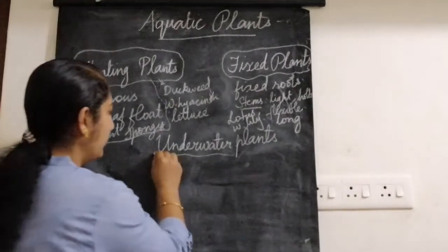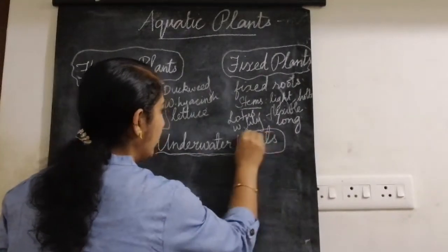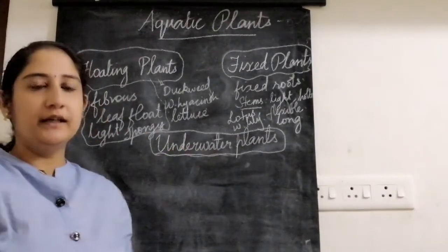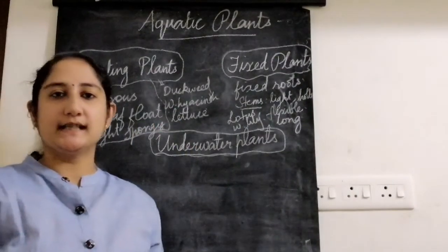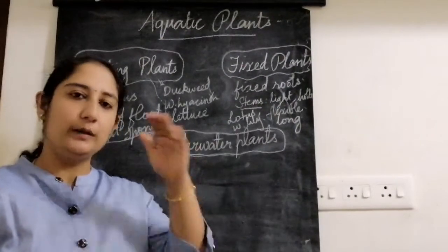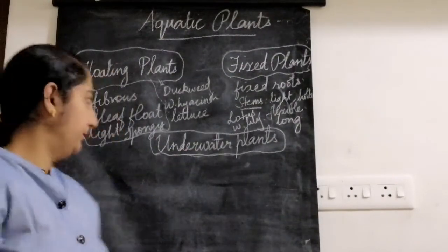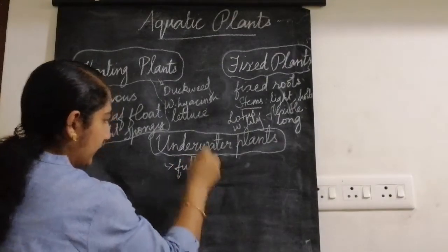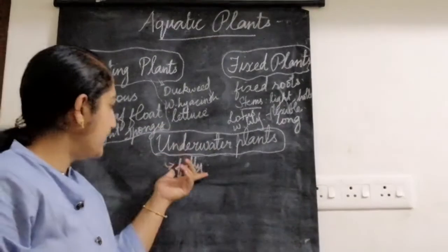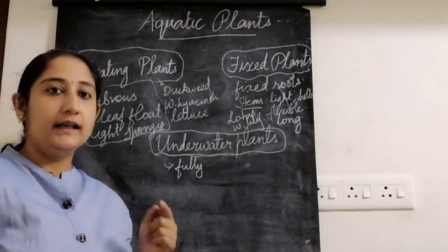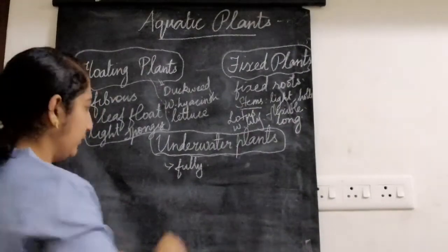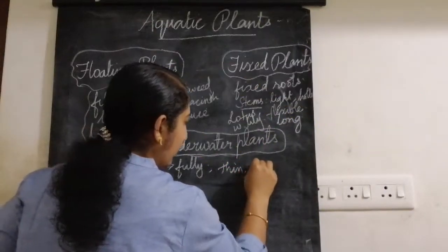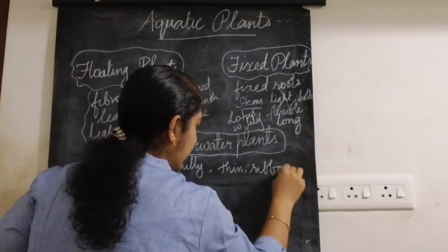Coming to the third type, which is called underwater plants. As the term suggests, they are fully submerged inside the water — fully present inside the water. These plants have thin, narrow, ribbon-like leaves.